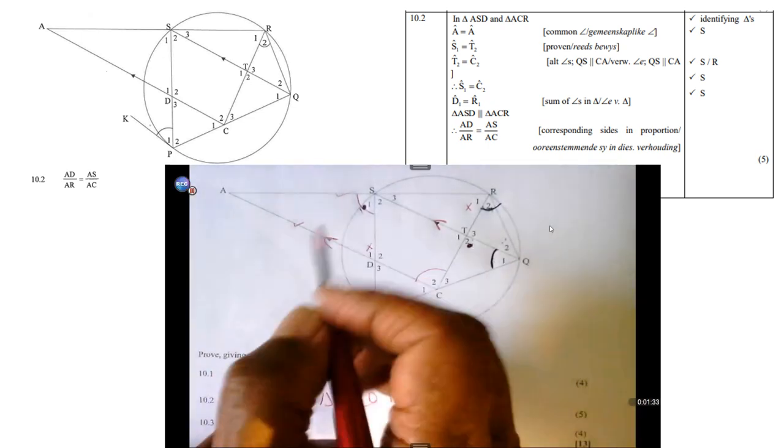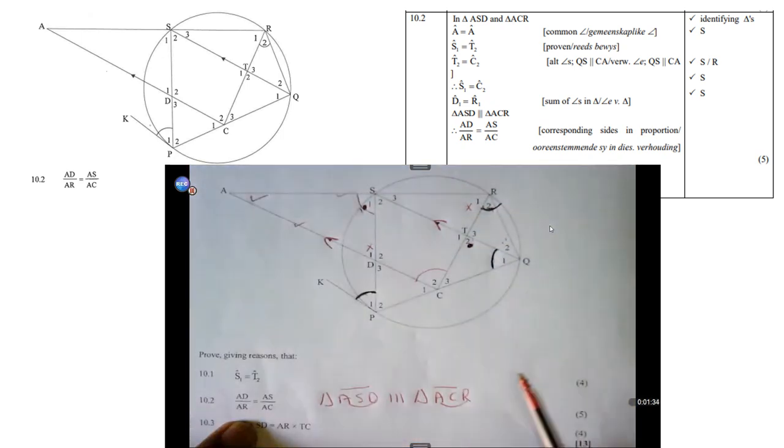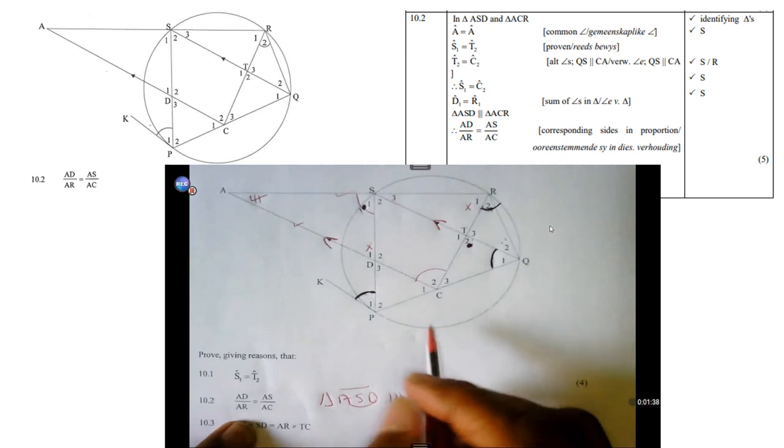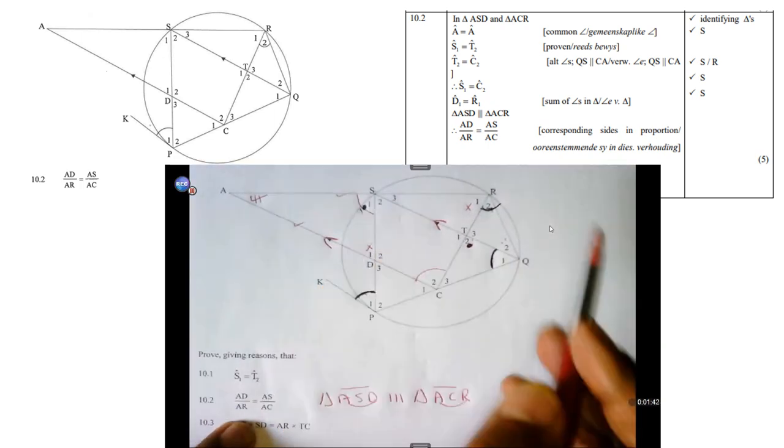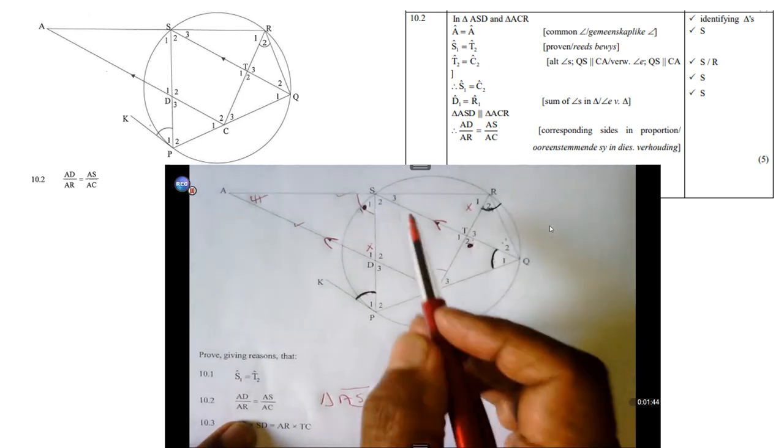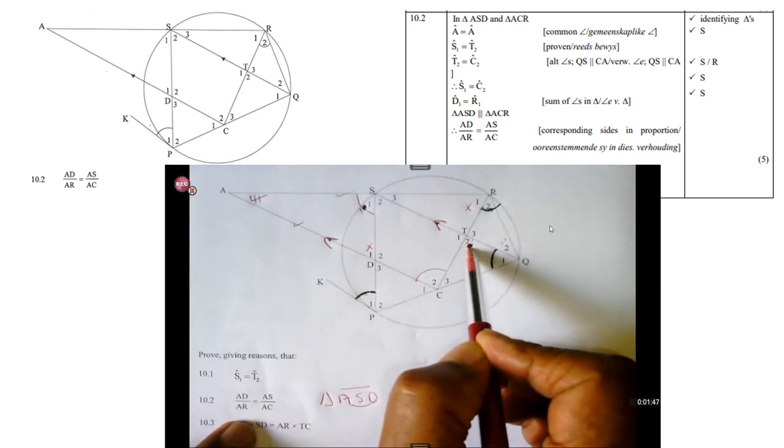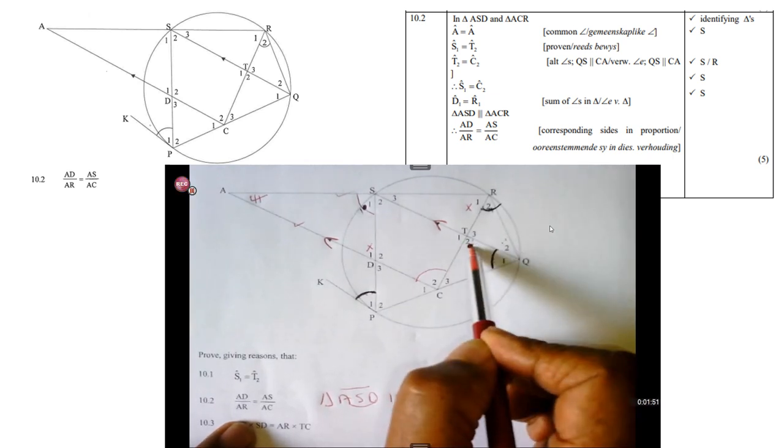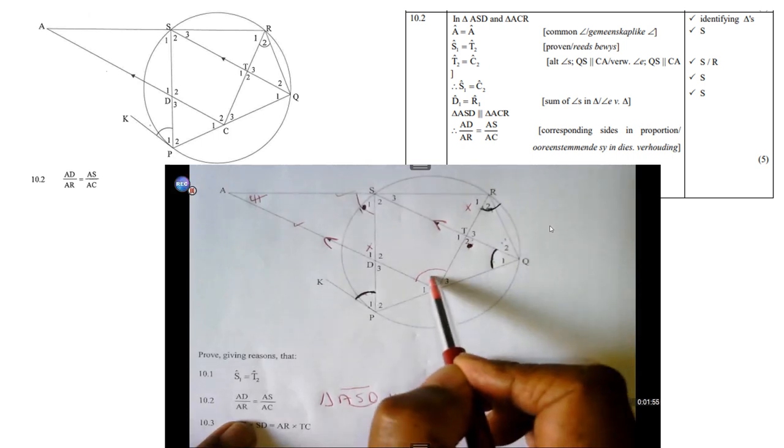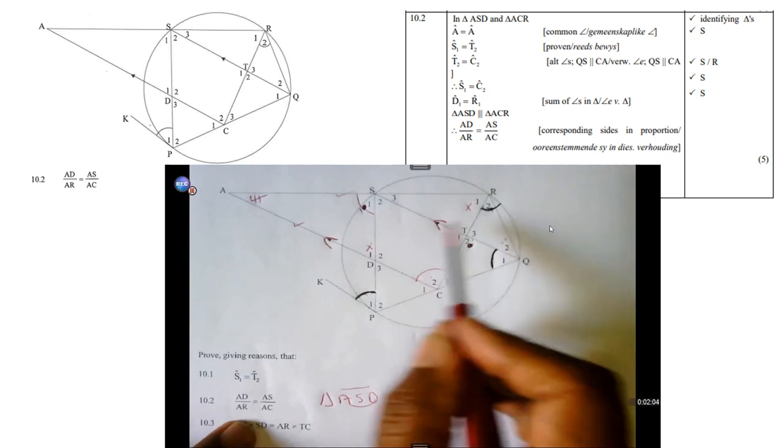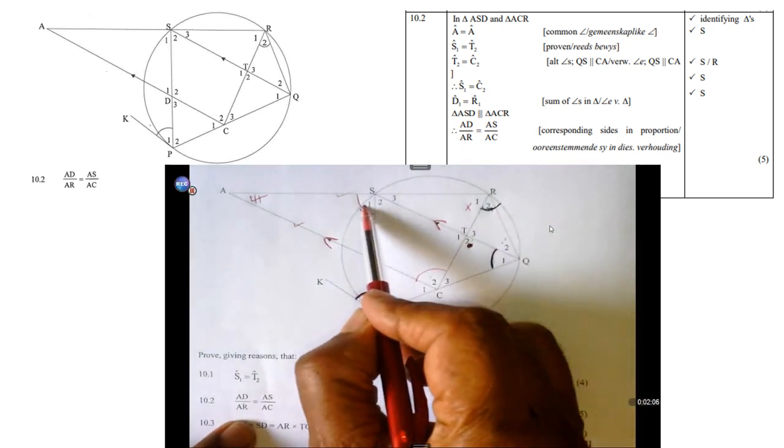For both triangles, angle A is common. Then S1 is equal to T2. S1 and T2 are equal, it's already proven. And then T2 and C2 are equal. Why? Because they are alternate angles. Remember those two lines are parallel, so they form alternate angles. Therefore, S1 is equal to C2.